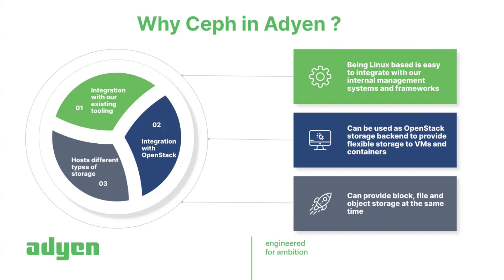Finally, we can host different types of storage using Ceph. This is important: we don't want to integrate another separate system just to provide a certain type of storage. We can use Ceph and export all three storage types — block, file, and object — and use all three at the same time. This is our main goal for a storage system.